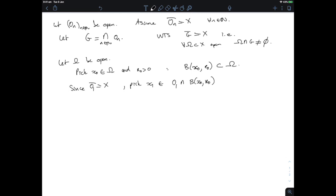But O₁ is open so you can pick not just an element in that intersection but an entire ball. So you can choose r₁ positive, but I'm actually going to choose it between zero and r₀/2 such that the entire ball B(x₁, r₁) is included in O₁ intersected B(x₀, r₀).